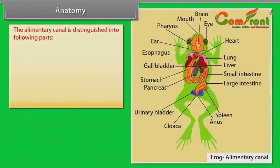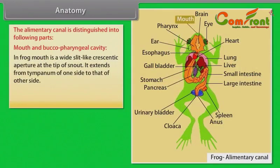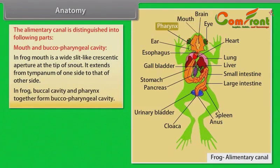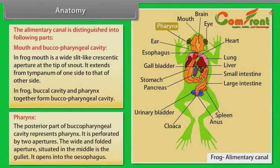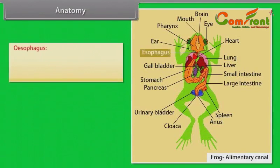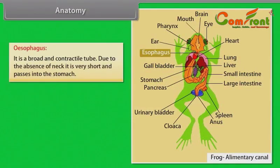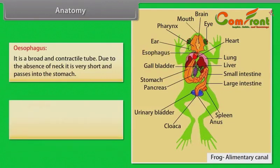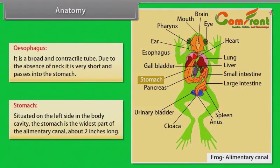Anatomy — Elementary Canal: The mouth is a wide slit-like crescentic aperture at the tip of the snout. In the frog, the buccal cavity and pharynx together form the buccal-pharyngeal cavity. The posterior part of the buccal-pharyngeal cavity represents the pharynx, which is perforated by two apertures; the wide folded aperture situated in the middle is the gullet, which opens into the oesophagus. The oesophagus is a broad, contractile tube that, due to the absence of a neck, is very short and passes into the stomach. The stomach is situated on the left side in the body cavity and is the widest part of the elementary canal, about two inches long.